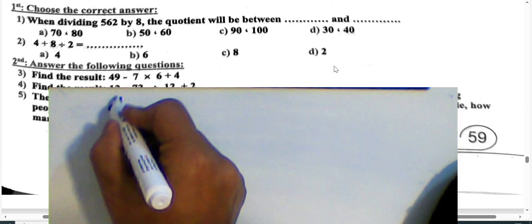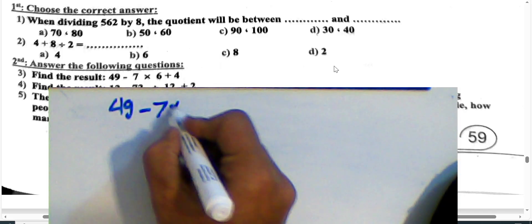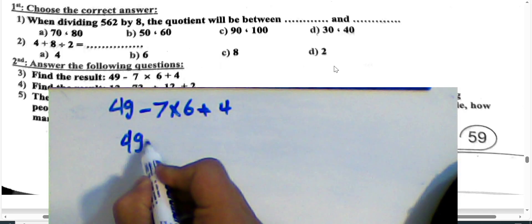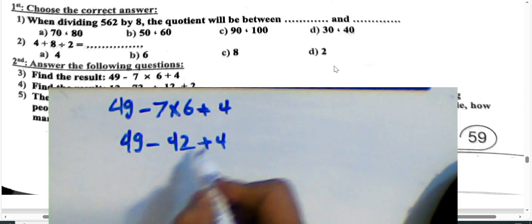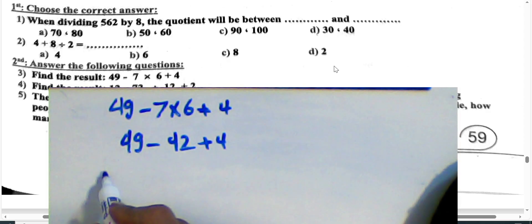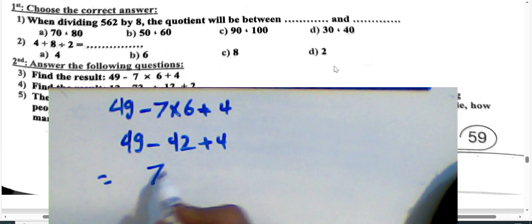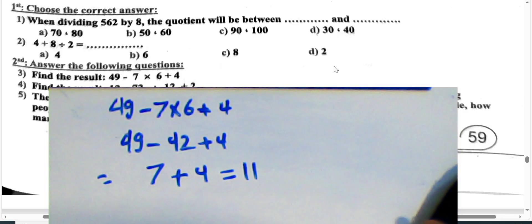Next question: Find the result of 49 subtract 7 times 6 plus 4. Multiplication first: 7 times 6 equals 42. Then 49 minus 42 equals 7, and 7 plus 4 equals 11. The result is 11.